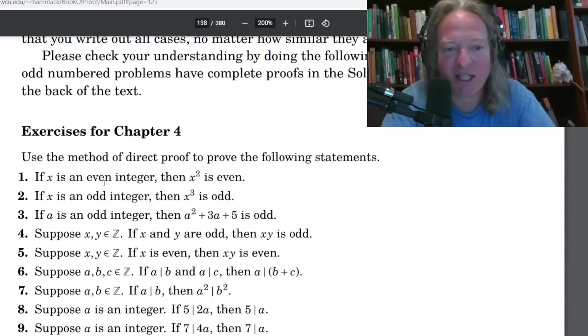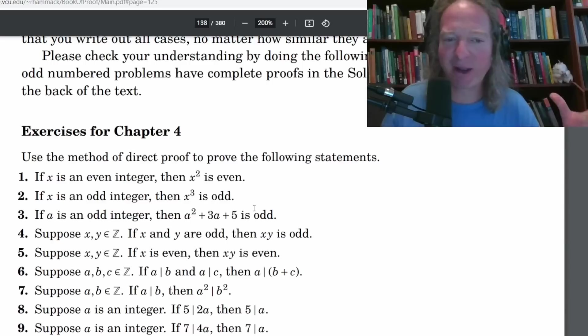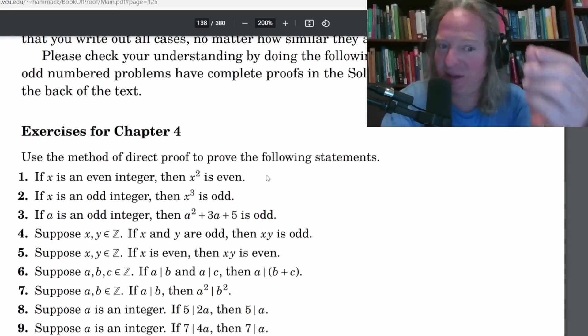Use the method of direct proof to prove the following statements. If x is an even integer, then x squared is even. So what you do is you take your paper or pencil or pen or whatever, notebook, whatever you want to write with, and you try to write it out. In this case, you would assume that x is even. And then you would show that x squared is even. You go through the process. And then you can check your answers. And again, his proofs are very well written.